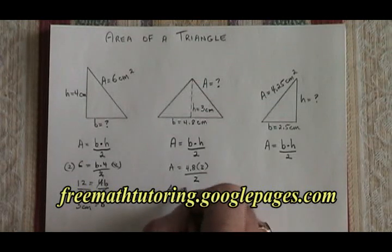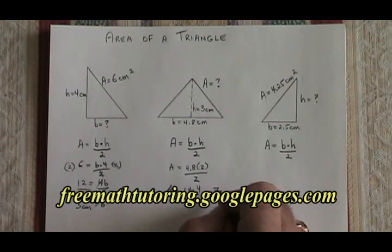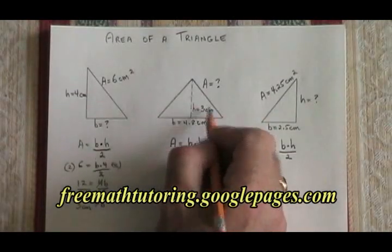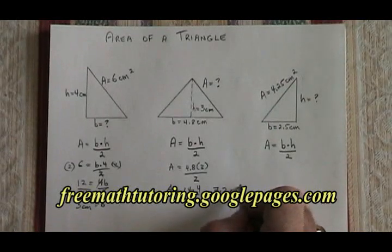Area is equal to 14.4 divided by 2, which is equal to 7.2. The units were centimeters, so the unit of area is centimeters squared.